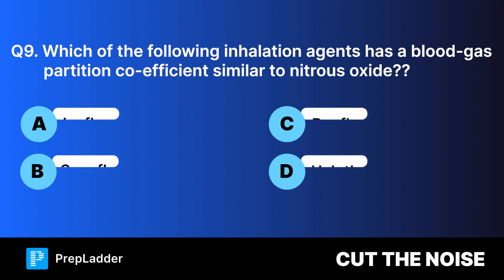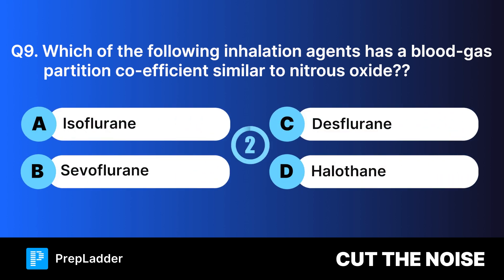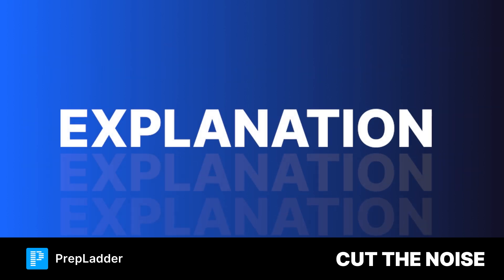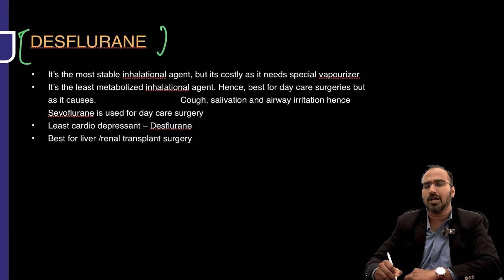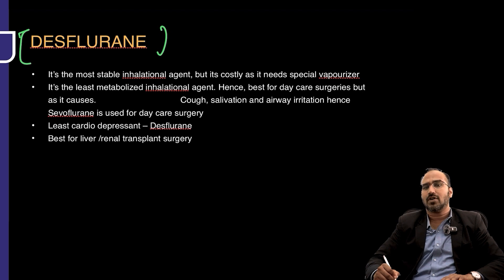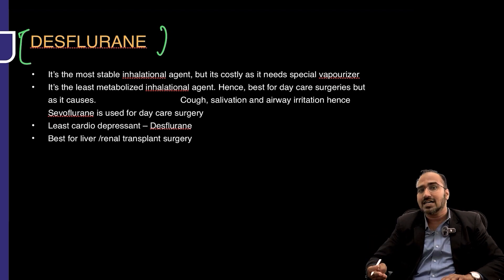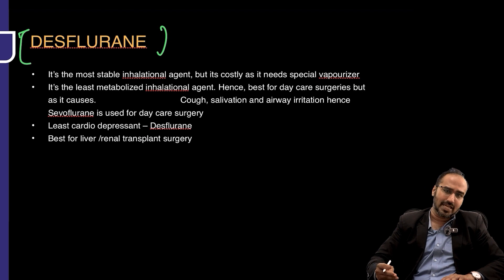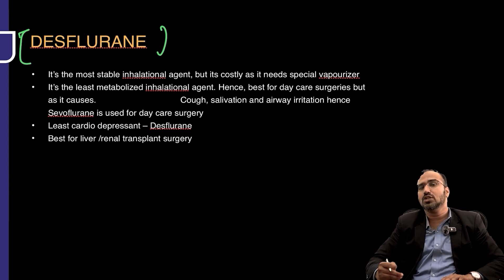Question number nine: which inhalation agent has a blood-gas partition coefficient similar to nitrous oxide? The correct answer is desflurane. Regarding desflurane: it is the inhalational agent best used for cardiac surgery, but it requires a costly vaporizer.